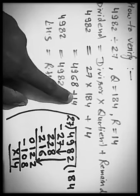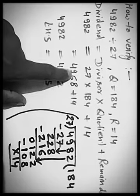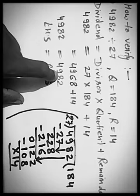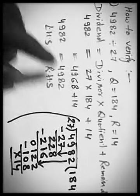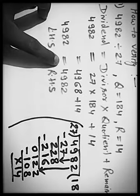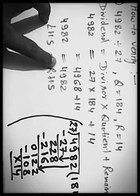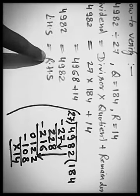4968 plus 14 equals to 4982. In this way, we can say, dividend equals to divisor into quotient plus remainder. Clear?